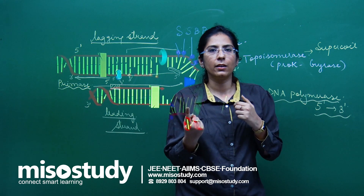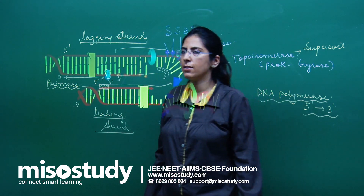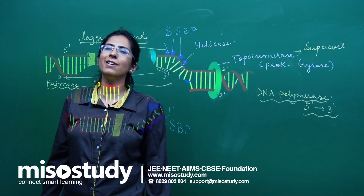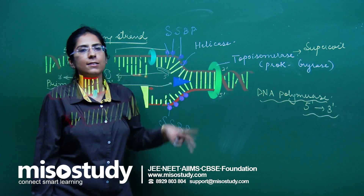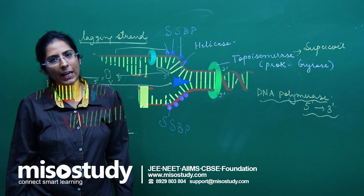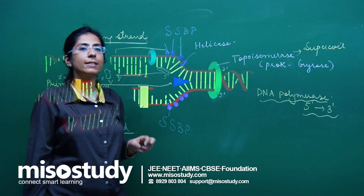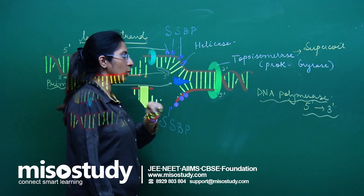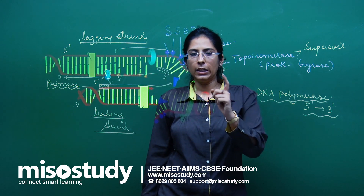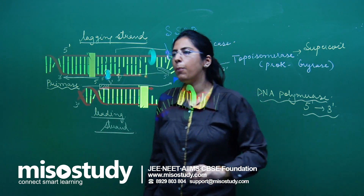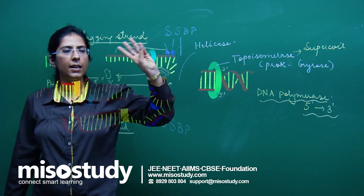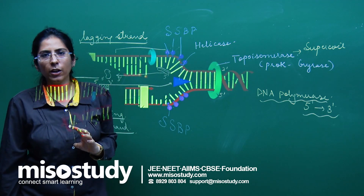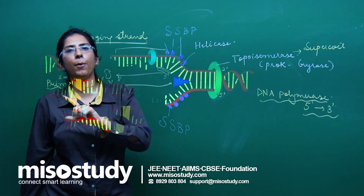Another question: Supercoiling is relieved by which enzyme? Answer: topoisomerase, and in prokaryotes specifically gyrase. Which enzyme opens the strands? Helicase. Which protein prevents single strands from rebinding? Single-strand binding protein (SSBP). What type of DNA polymerase is involved in replication? DNA-dependent DNA polymerase.